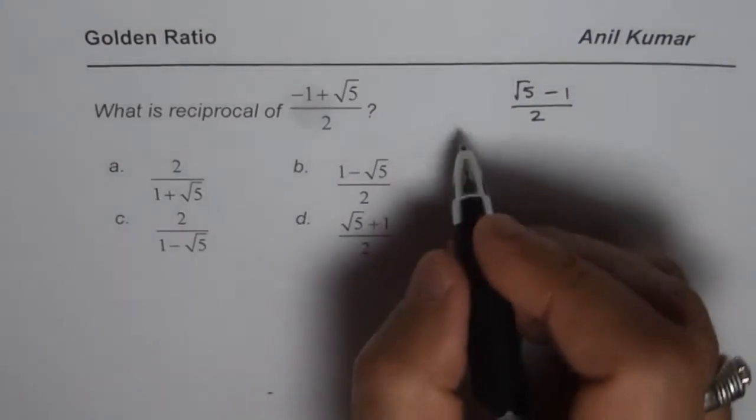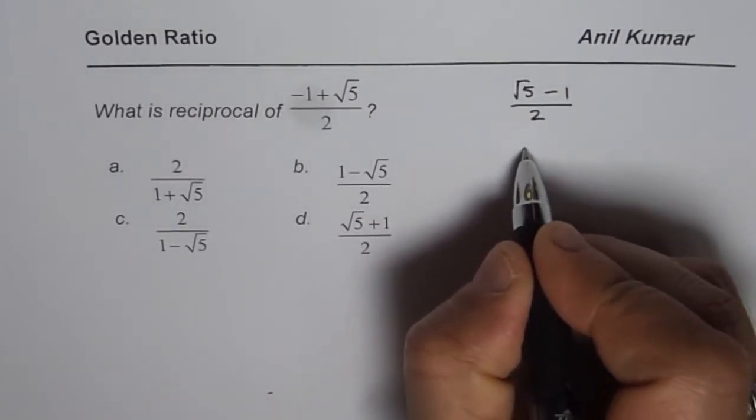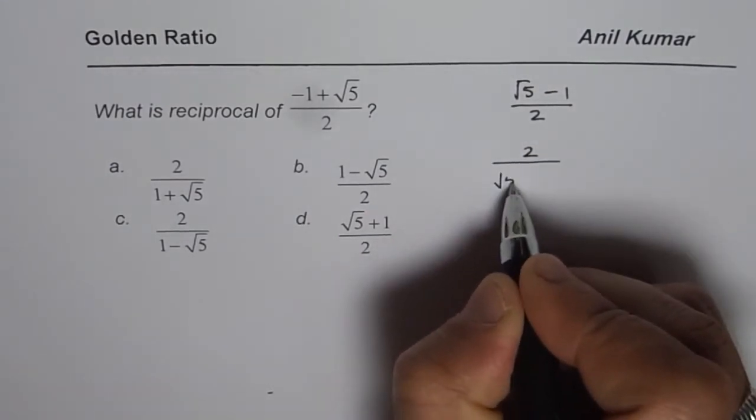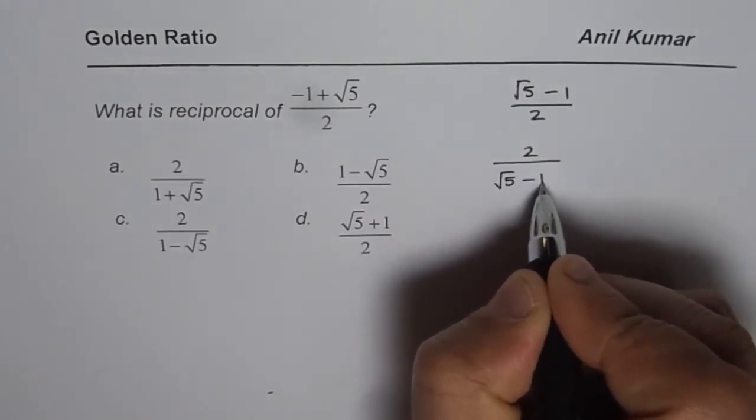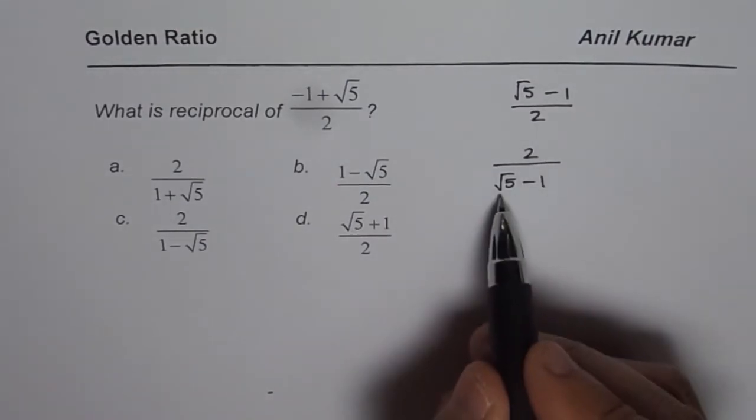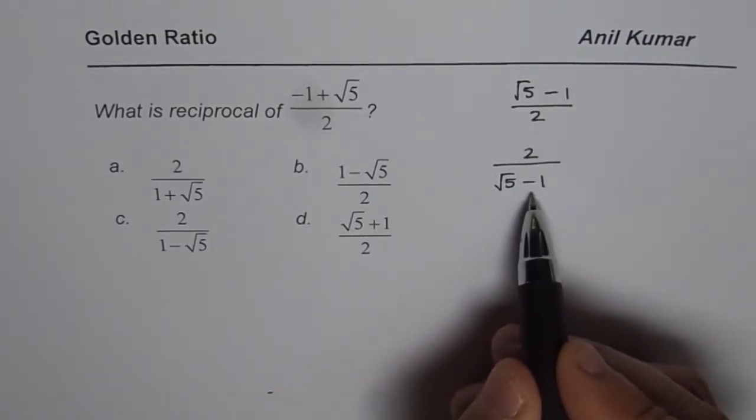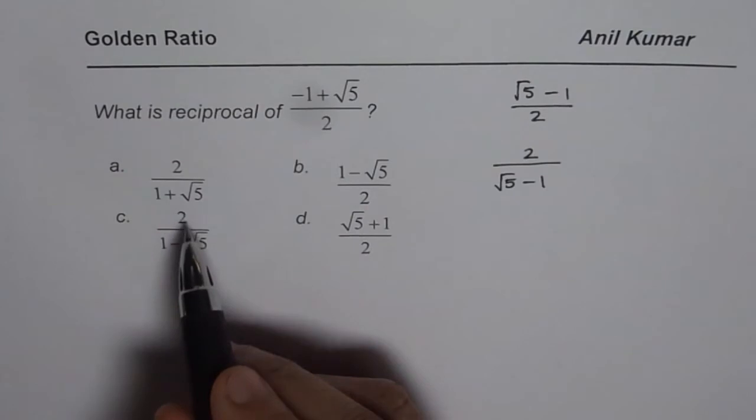Reciprocal of that number will be what? 2 over √5 - 1. Now 2 over √5 - 1, we do not have that option here.